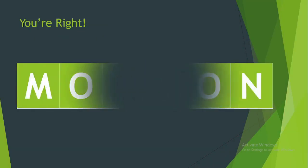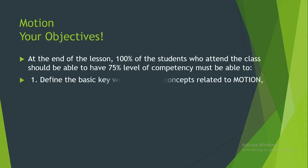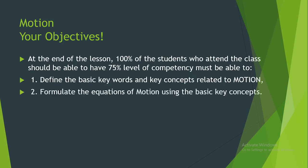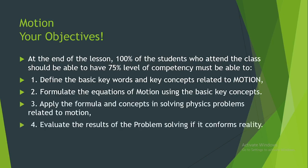In this lesson, you should be able to have 75% level of competency in the following desirable learning objectives: 1. Define the basic key words and key concepts related to motion. 2. Formulate the equations of motion using the basic key concepts. 3. Apply the formula and concepts in solving physics problems related to motion. 4. Evaluate the results of the problem solving if it conforms to reality.